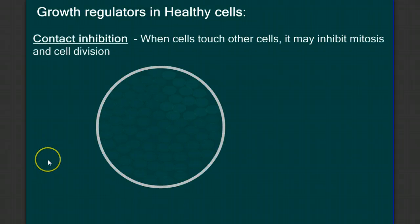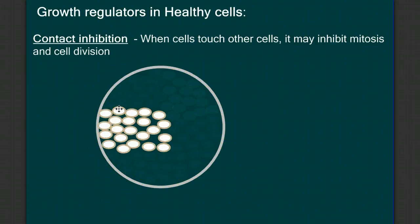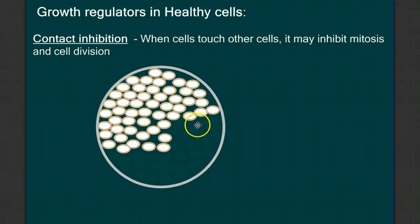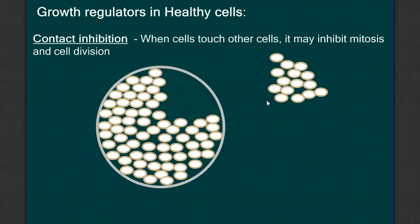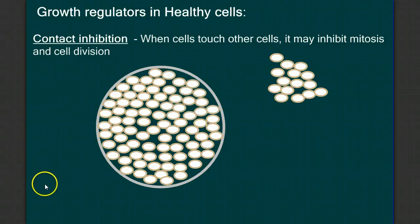A third type of growth regulator is a concept called contact inhibition. If I have a culture medium here and I put some cells in there, those cells will start to grow and divide and start to fill up this space. Eventually, these cells will cover the entire surface of this medium — and then the interesting thing happens: they stop dividing. It's as if they understand that they're out of room. The physical contact on all sides by other cells inhibits any more cell division. And we know this because if we take a group of these cells out, the cells along the exposed region will start to divide again until they fill that space, and then they'll stop.